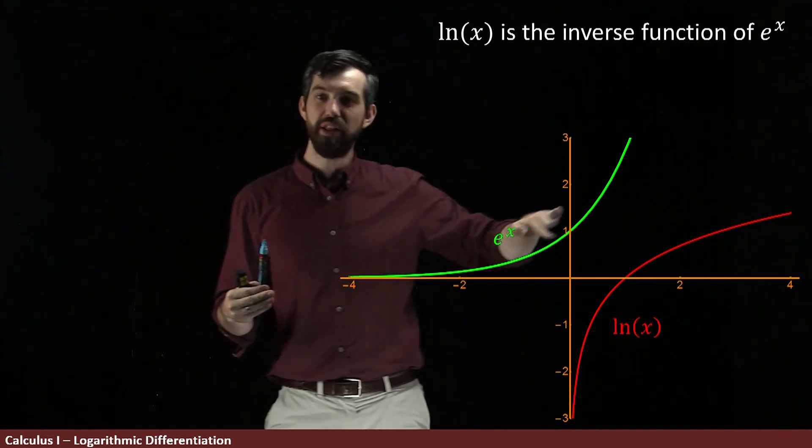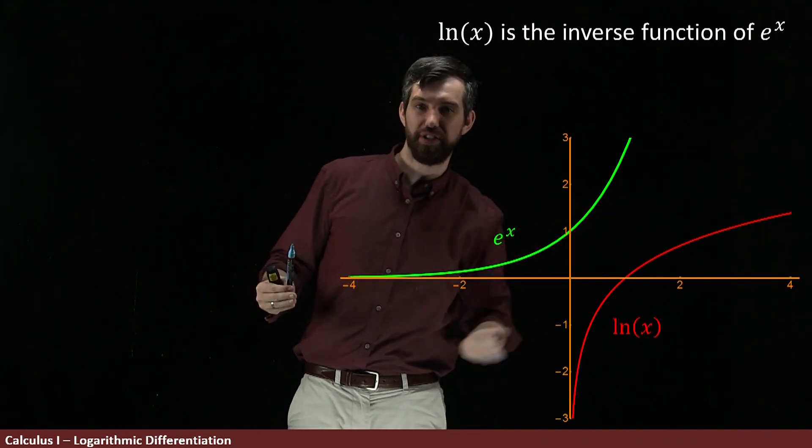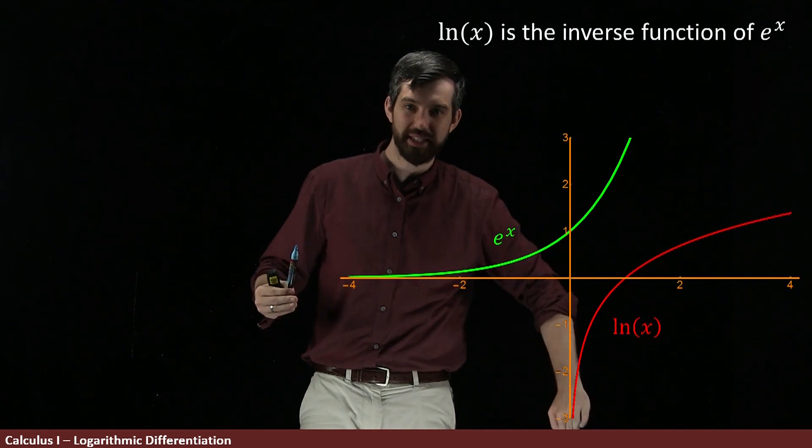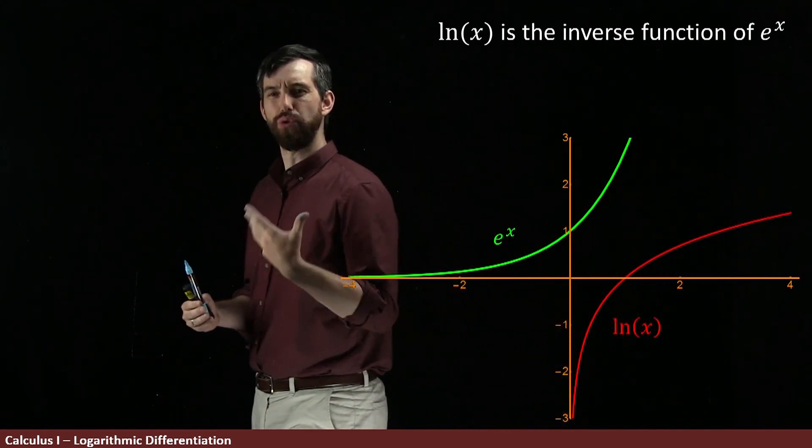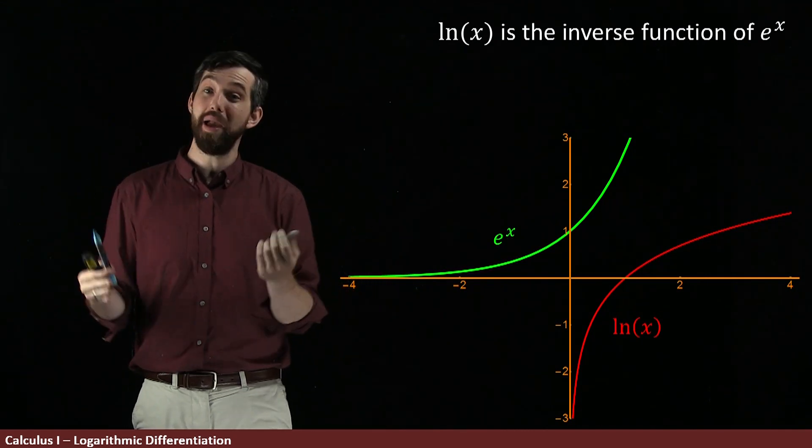So what I've graphed here is e to the x, and because it's an inverse, we have this nice reflection over the line y equals x, and what we get is the natural logarithm over here. And the natural logarithm has a restriction on its domain.